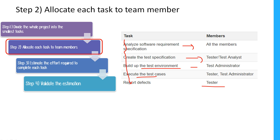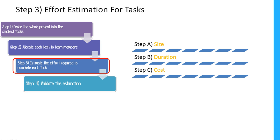The third step is to estimate the effort required to complete each task — this is the most important phase. Effort estimation is done across three aspects: size, duration, and cost. We first estimate the size of the task, then determine how much duration it will take, and finally derive the cost. We'll go through these one by one.